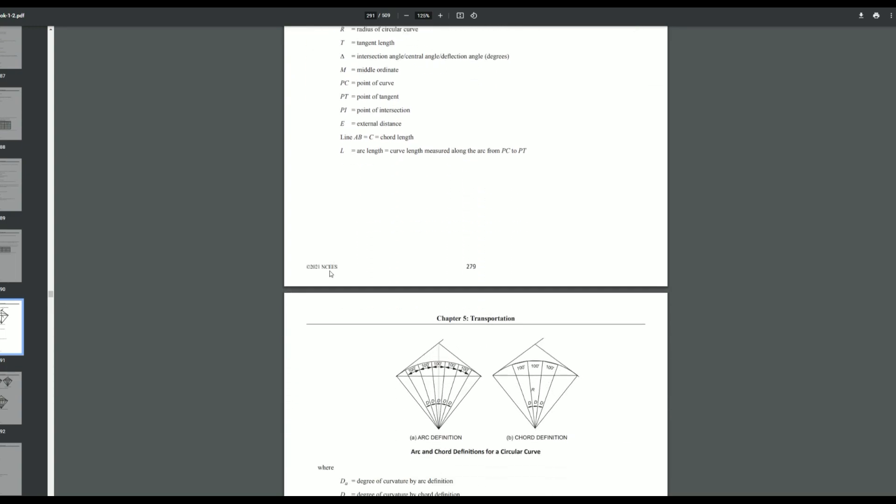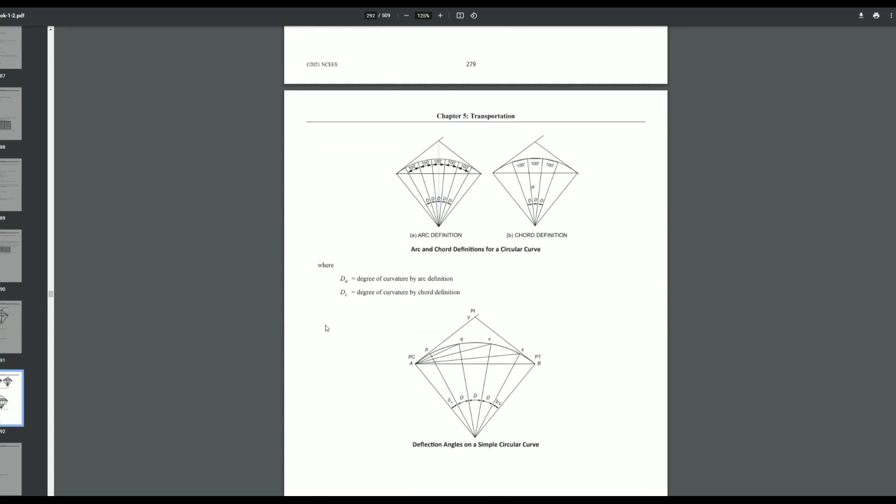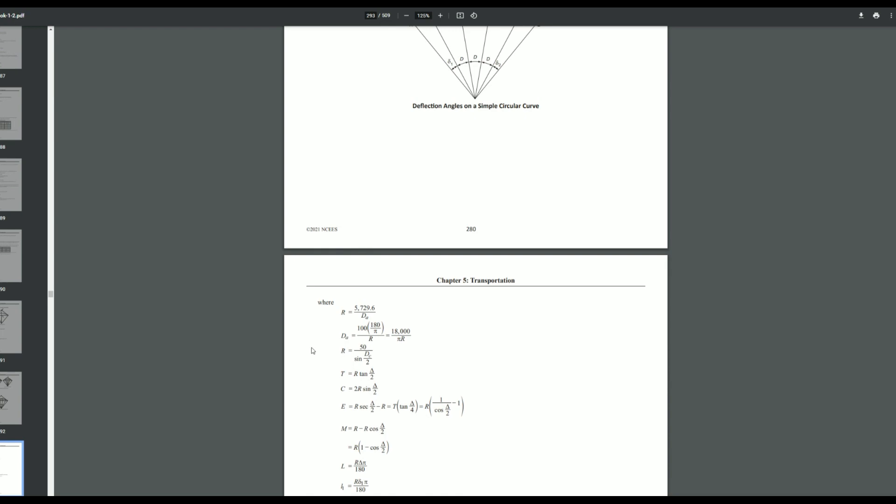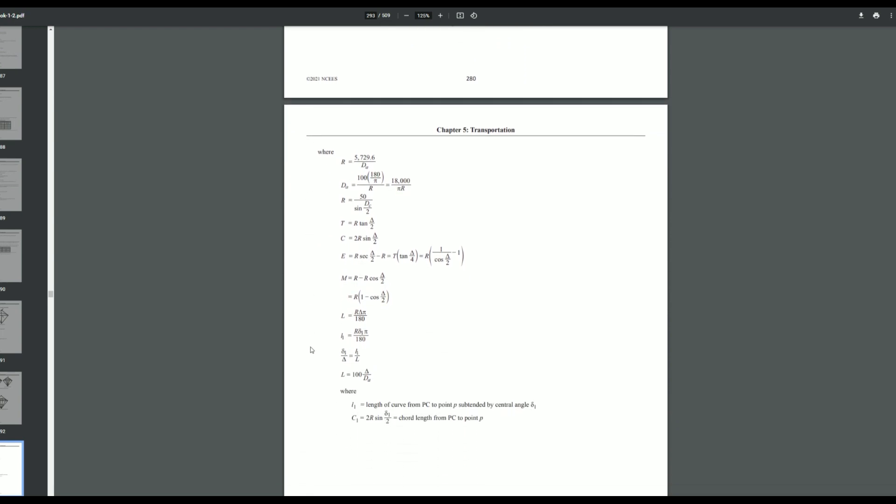So if you scroll down just a couple pages, it gives us a couple other elements of a horizontal curve. The degree of curvature by arc definition and degree of curvature by chord definition. But then this is the page we mainly want to focus on.